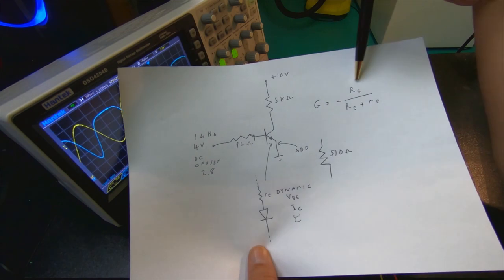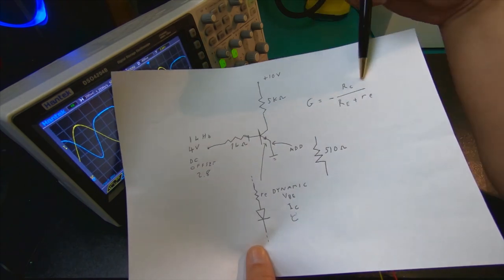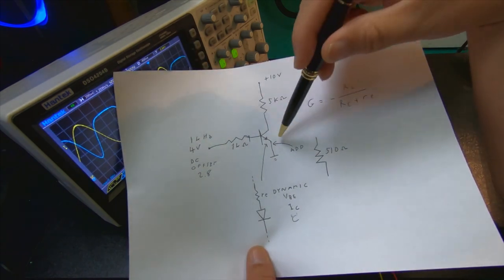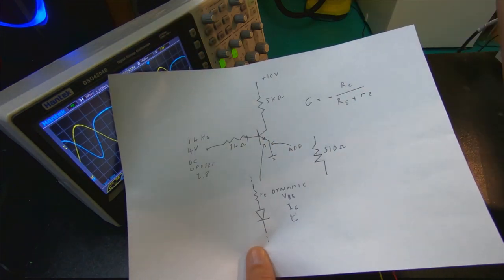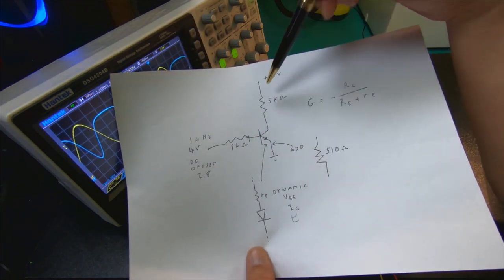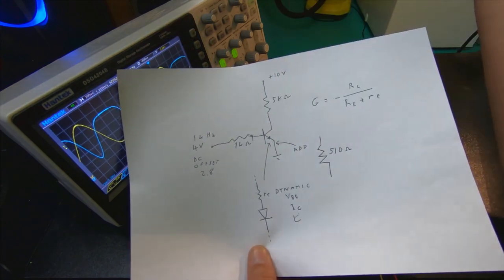So basically when you calculate the gain, it's a combination of if you have a resistor on the emitter, or it's just RE. So in this case, it's a very large gain.